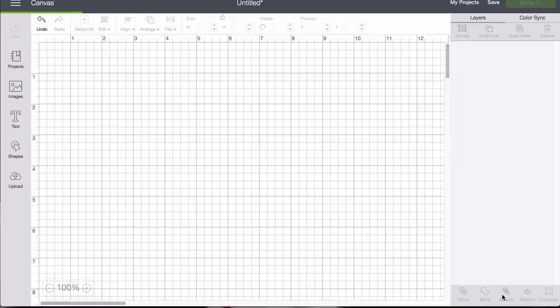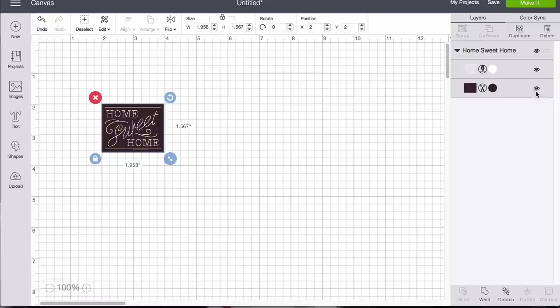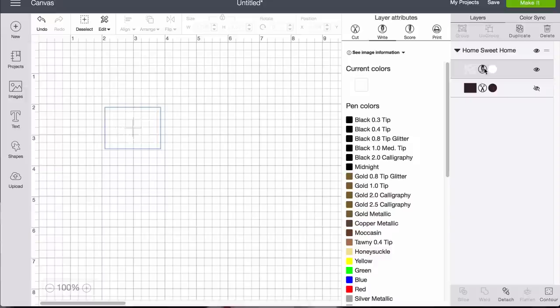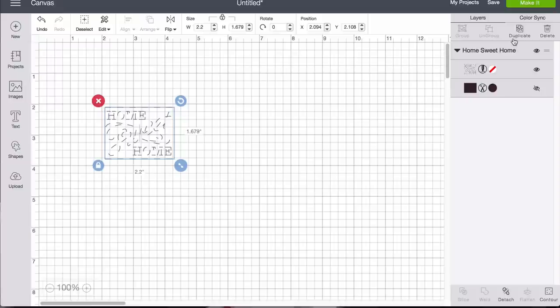I picked out a Home Sweet Home writing design for this, so I'll find it again and place it on the mat. I hide sections I don't need, in this case the border, and I set the remainder to score, since I'll be using the scoring tool for this. For demo purposes, I'm adjusting the size of my design based on the foil I put on the mat. Normally, of course, you would design first, then cut and place the foil and paper on your mat accordingly.